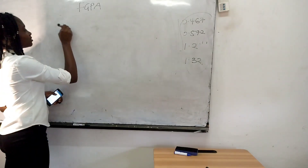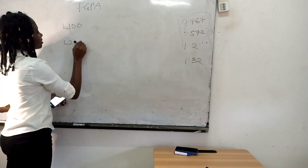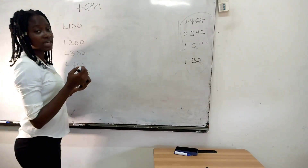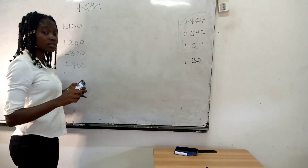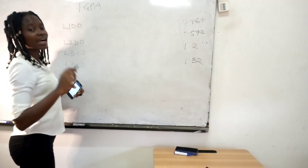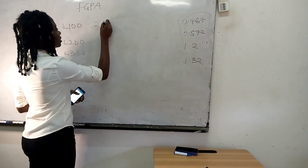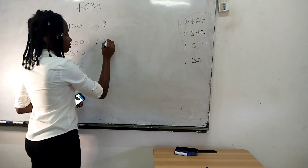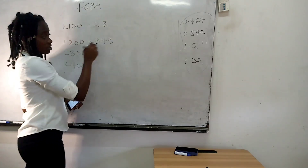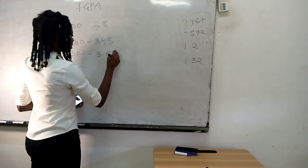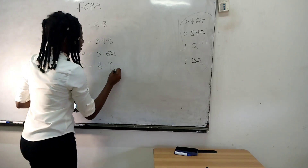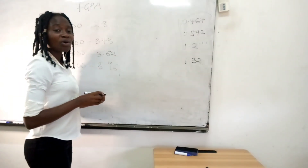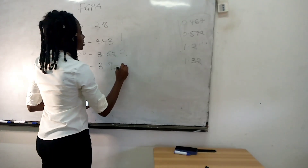Okay, so let's look at the final GPA. We have level 100, 200, 300, and level 400, each with a GPA. The university uses a weighting ratio of 1 to 1 to 2 to 2 for the four levels. Together this ratio gives you 6. So you calculate: 1 divided by 6 times the level 100 GPA, 1 divided by 6 times the level 200 GPA, and 2 divided by 6 times the level 300 and 400 GPAs respectively.